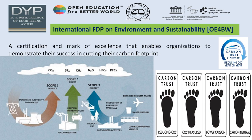A certification and mark of excellence that enables organizations to demonstrate their success in cutting their carbon footprint. There are four carbon footprint categories: reducing CO2 major, lower carbon, and carbon neutral. In the environment, there are a number of ways to escape carbon dioxide — Scope 1, Scope 2, and Scope 3 — as seen in the diagram, which mentions cars, industries, buses, etc.